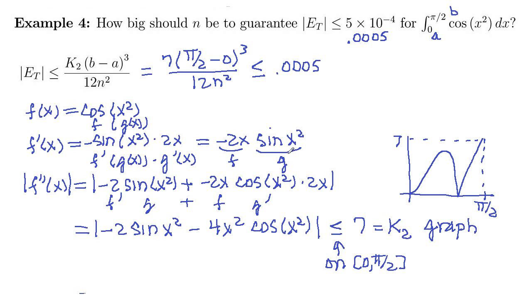And we want to set that less than or equal 0.0005. So let's multiply both sides by n squared. Actually, let me do some simplifying here. So we've got pi over 2 minus 0 is pi over 2, cube that. We'll have a pi cubed over a 2 cubed. So that's pi cubed over 8. So we've got 7 pi cubed over 8 on the top. And on the bottom, 12n squared. Less than or equal 0.0005. And so let's multiply both sides by n squared. These guys cancel.